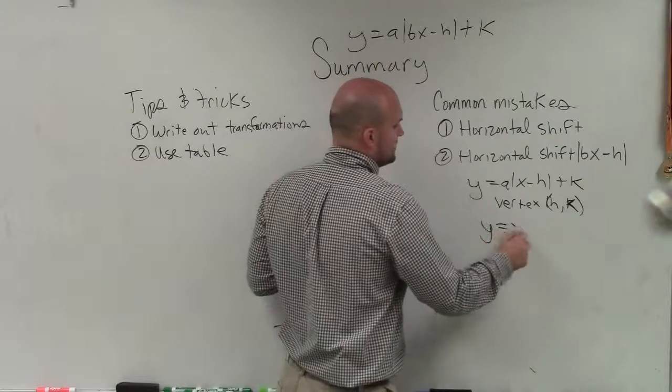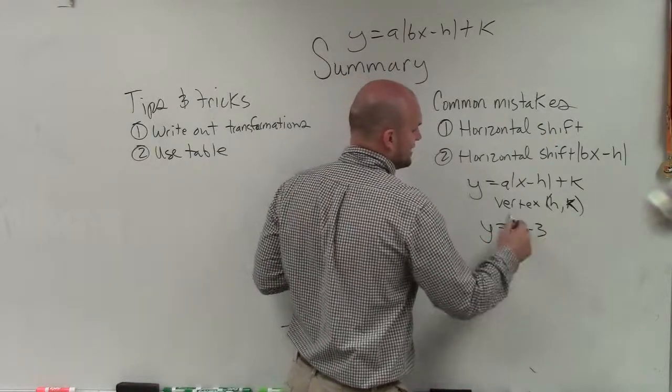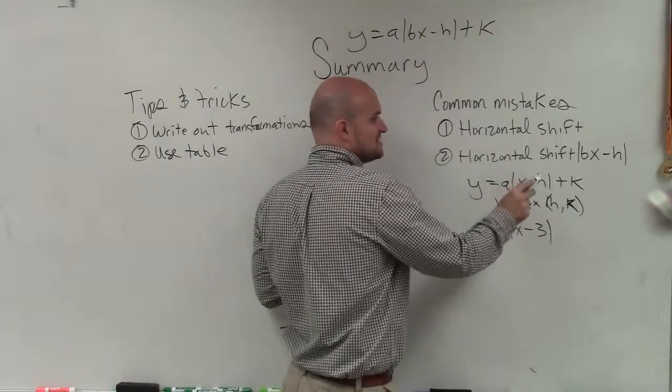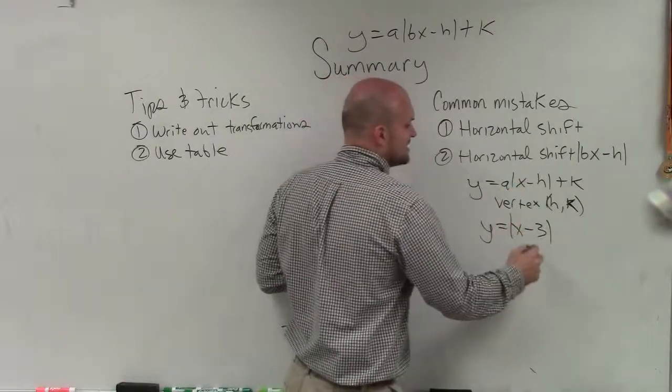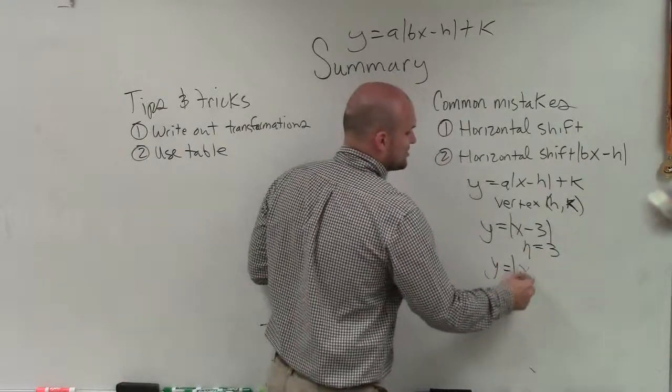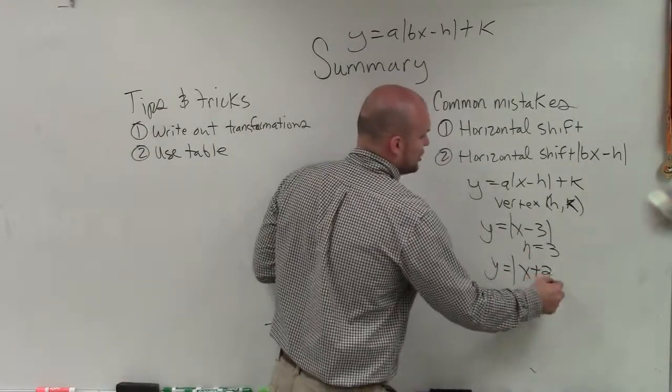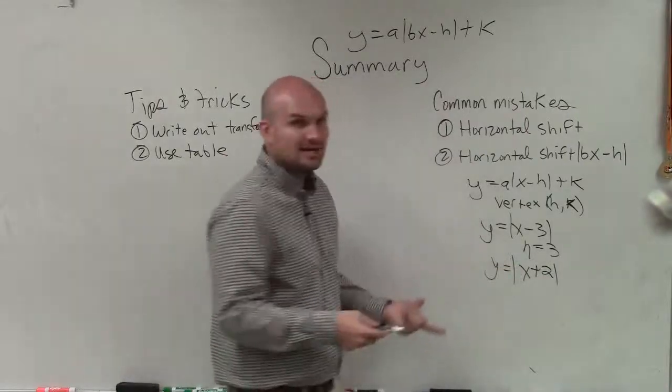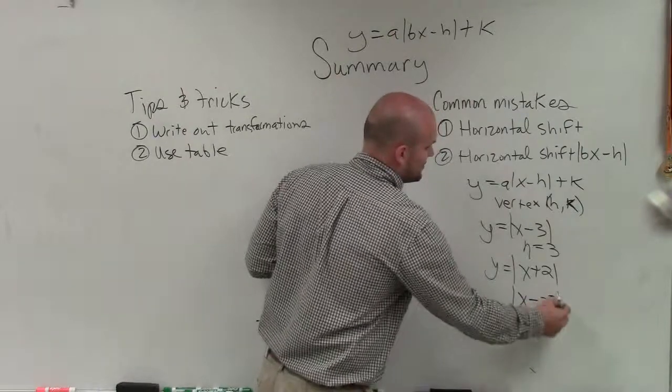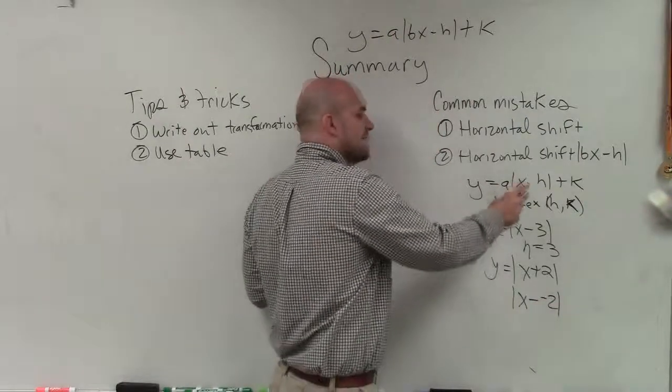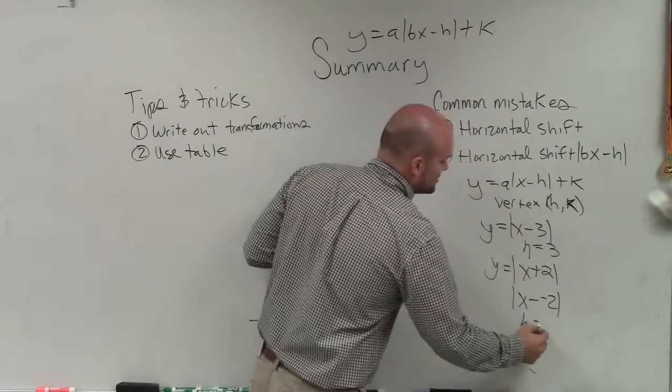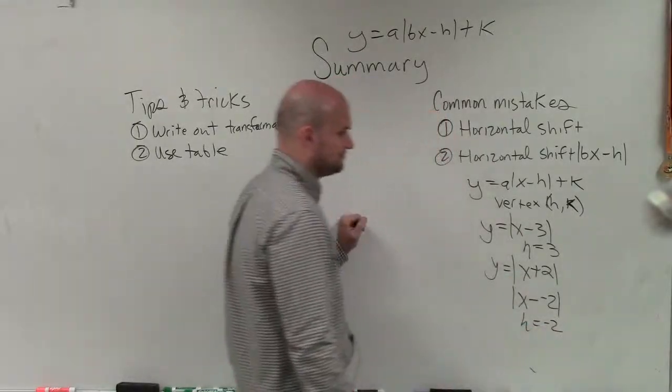So if I have an equation, y equals x minus 3, it's x opposite of 3, x opposite of h. So x opposite of 3 means h equals 3. It gets even more confusing when I do x plus 2. Well, there's no negative there, but remember, an addition problem, we can rewrite this as x opposite of negative 2. So as I say, x opposite of h, x opposite of negative 2. That means h is equal to negative 2, all right.